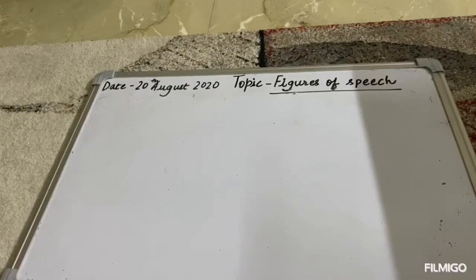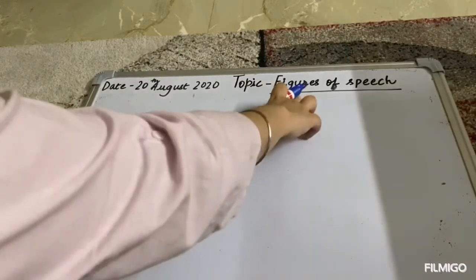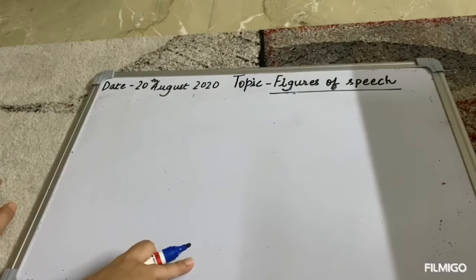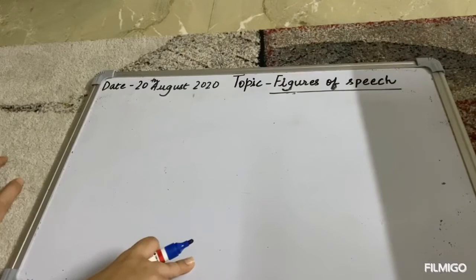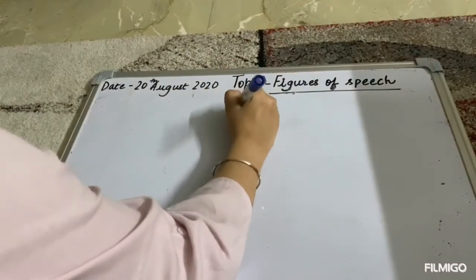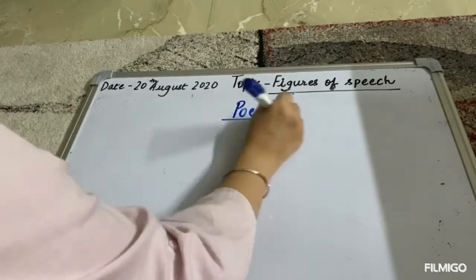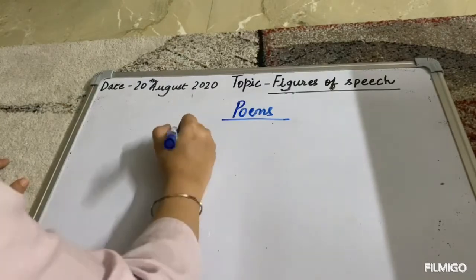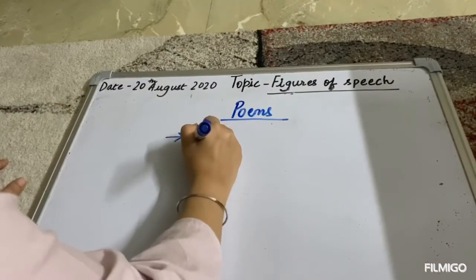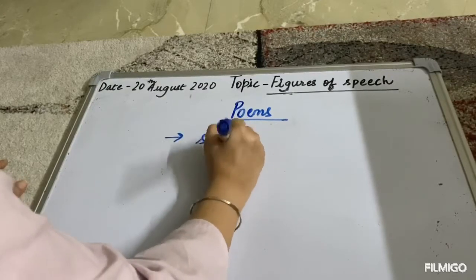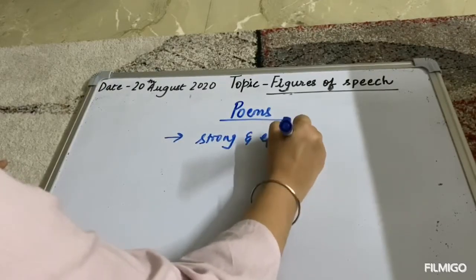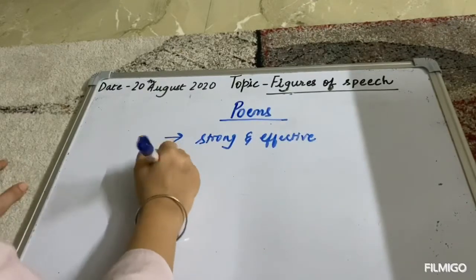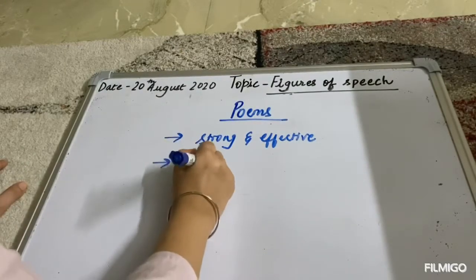Good morning children. It's time for another lesson, and the topic for today's lesson is figures of speech. You all must be wondering why we are learning figures of speech. Children, which topic are we doing these days? Yes, we are doing poems. Making use of figures of speech in our poems makes our poems strong and effective, and it gives a powerful impact to our poems.